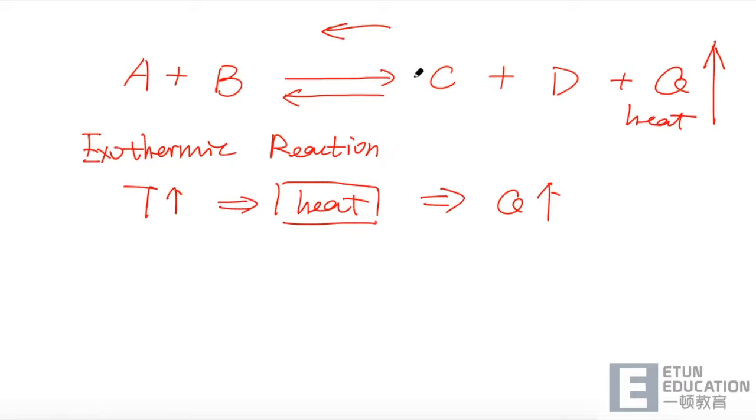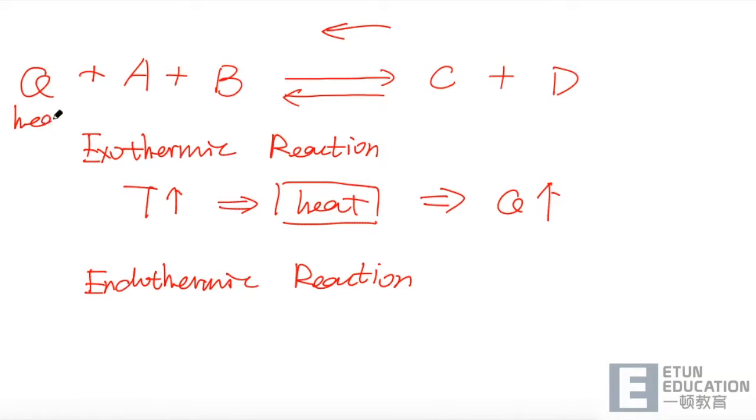所以 equilibrium position will shift to the left direction. 相反,如果这个反应它是一个 endothermic reaction,那我们就把这里的这个 heat 给擦掉,在这个反应的左边加上 Q,也就是 heat. 当温度升高的时候,相当于 heat supply increase,也就是环境中的 heat increase. 我们就可以在这里标记为 heat increase.